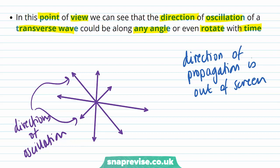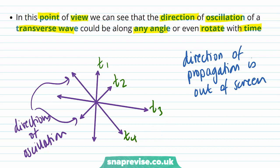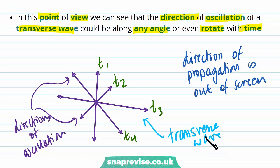We can have lots of different directions of oscillation for one particular direction of propagation. Each direction might occur at different times — t1, t2, t3, t4. This shows that a transverse wave traveling in a certain direction can have lots of different directions of oscillation, because by definition the oscillation is perpendicular to the direction of propagation, and there are many such perpendicular directions.